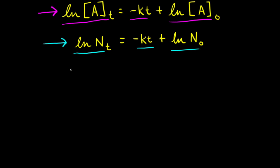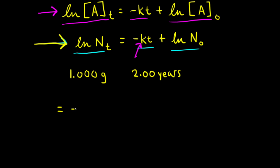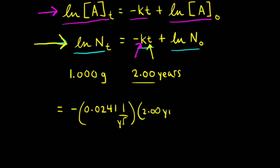Let's say we start with 1.000 gram of Strontium-90 and want to find how much remains after two years. We'll use the integrated rate law and plug in what we know. K is 0.0241 per year, T is 2.00 years, and the initial mass is 1 gram. Because mass is proportional to the number of radioactive nuclei, we can plug in the natural log of 1 for ln(N₀).